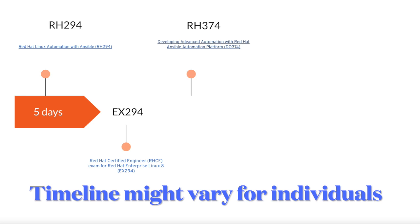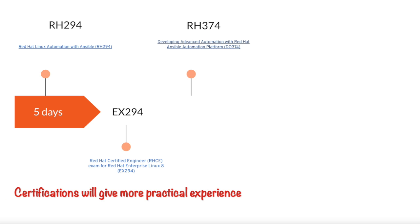The second course which you should plan on doing is Developing Advanced Automation with Red Hat Ansible Automation Platform. This course mainly focuses on the best practices of Ansible which you should use in any enterprise environment, along with an introduction to and use of the Ansible Automation Platform. It's a combination of both and it's really helpful if you want to make a career and write playbooks that could be used in an enterprise company.